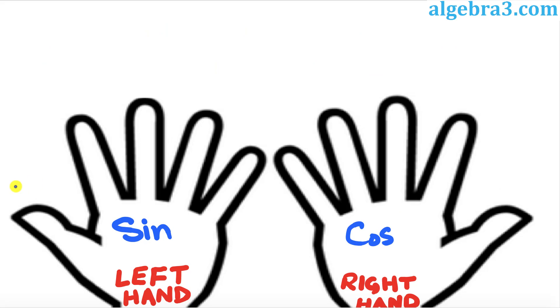The next step is to identify each finger with the angle value. So thumb on the left hand must be 0 degrees, index finger 30 degrees, middle finger 45, ring finger 60 degrees, and your pinky, the smallest finger, is going to be 90 degrees.